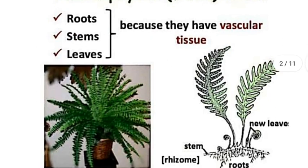In the figure, there are roots, rhizomes, stems, and leaves. The shape of the leaves varies. There are different types of leaves and trees in pteridophytes.